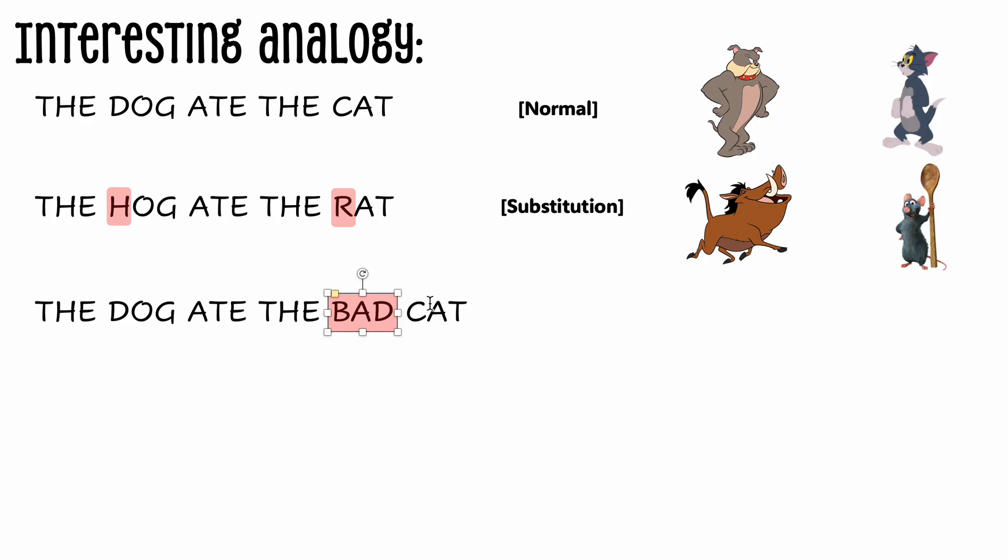Here we just said THE DOG ATE THE CAT, so it didn't say which one was at fault. Now it's saying it ate the bad cat, so now we don't feel bad for the cat anymore. The sentence meaning is changed once again, and this is an insertion mutation - we're inserting letters.